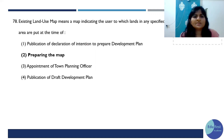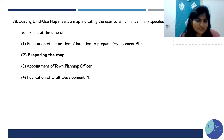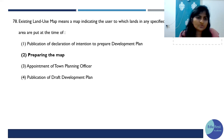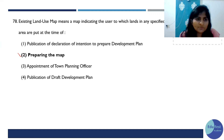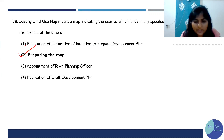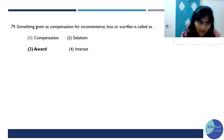Existing land use map means a map indicating the use to which land in a specific area is put at the time of E.L.U. — that is, while preparing the maps. So the answer is clear here: it relates to the time of preparing the DP and RP, and if you look at this process once, you can easily identify the answer.